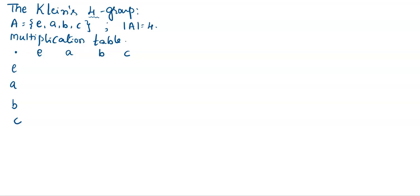E dot E gives E. When we multiply the identity element with A, we get A. When we multiply the identity element with B, we get B itself. Similarly, C itself. We can observe in the first column also: A with identity gives A, B with identity gives B, and C with identity gives C.